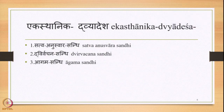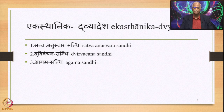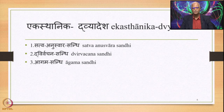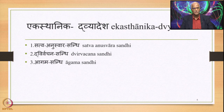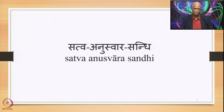There are three instances of Ekasthanika Dvyadesha: Dvirvachana Sandhi, Agama Sandhi, and Sattvanuswara Sandhi. We have already studied Dvirvachana Sandhi and Agama Sandhi. What remains is Sattvanuswara Sandhi, which is studied at the end of Hal Sandhi primarily because some of its Sutras are also used in the next chapter, Visarga Sandhi. So now let us study Sattvanuswara Sandhi in detail.